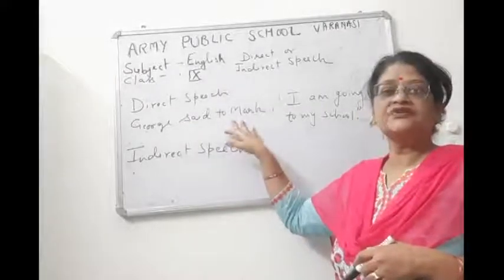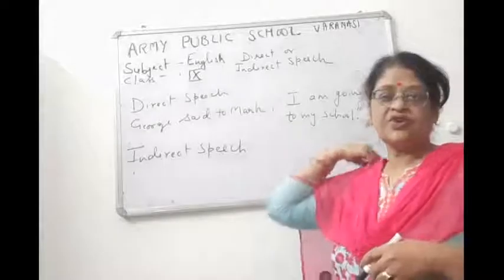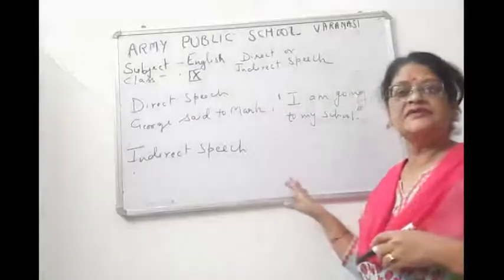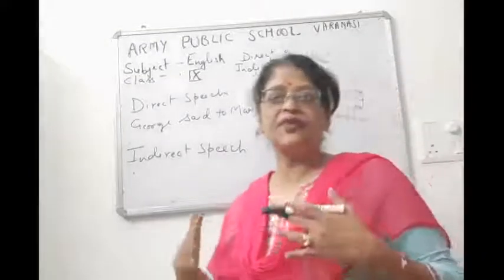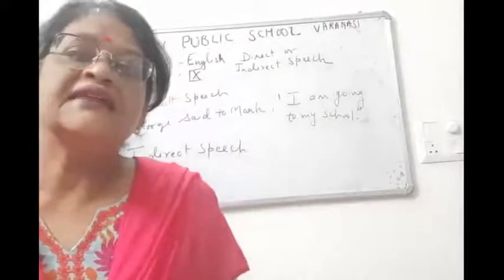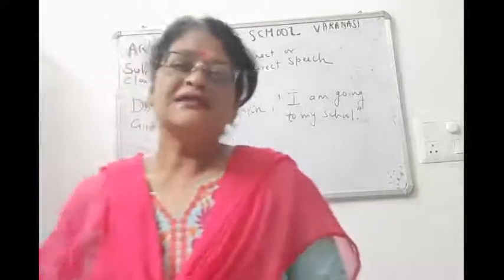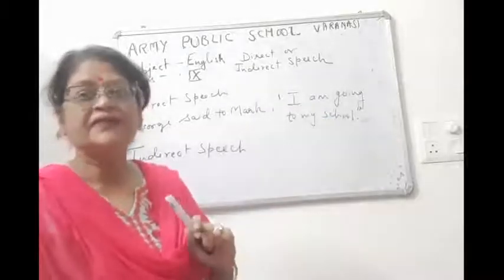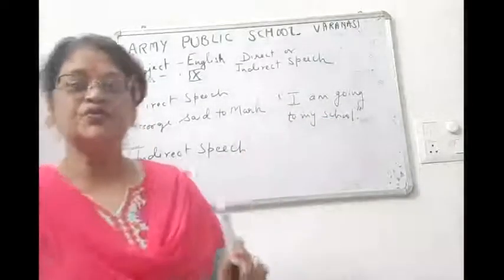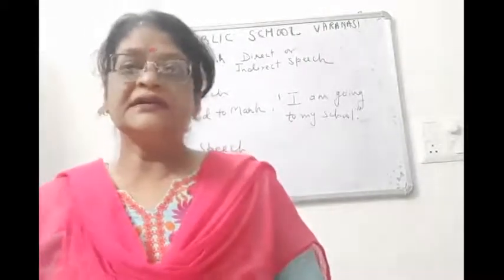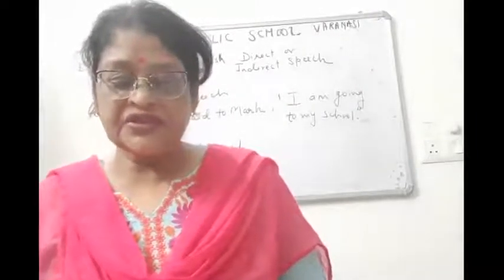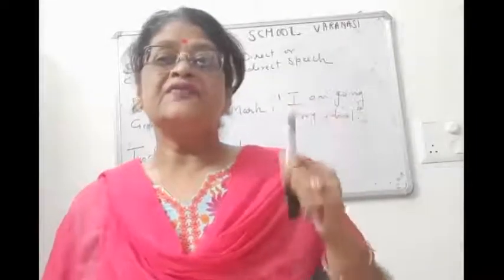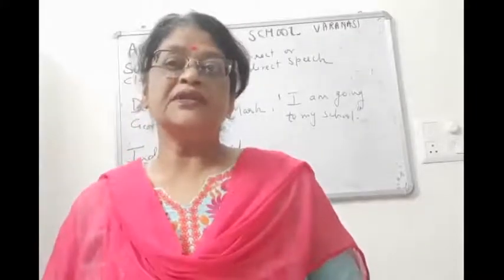Here you can see: George said to Mark. Two persons are there — George and Mark. Whatever George is saying to Mark, his words are in the inverted commas. Those words inside the inverted commas are the exact words of the speaker, and this exact word of the speaker is direct speech. We keep the exact statement of the speaker in inverted commas.